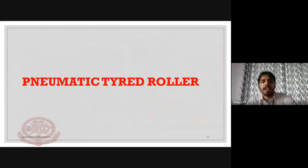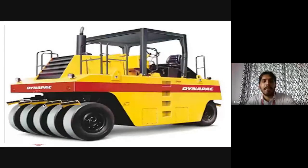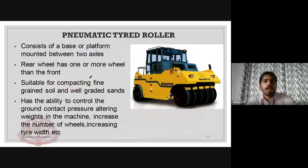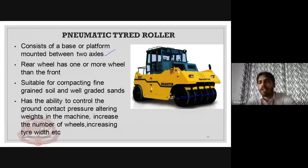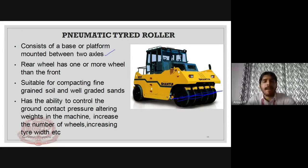Now we are going to the pneumatic tire roller, which is a very typical roller. The peculiarity of this type is that it consists of a base or platform mounted between two axles. As in an automobile, there will be axles, and more wheels are placed on those axles. The rear wheel has one or more wheels than the front.